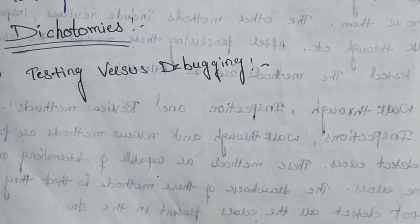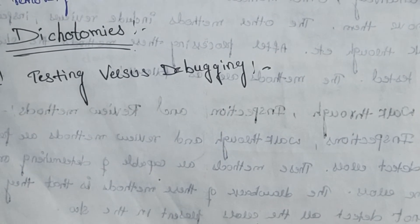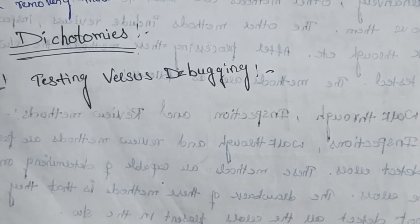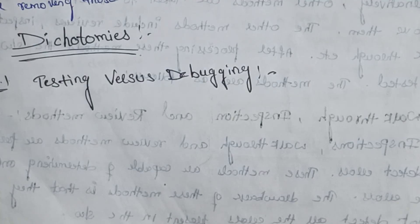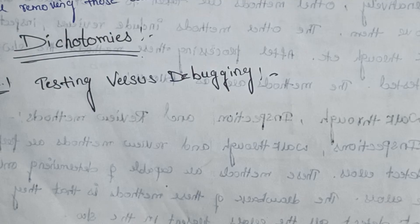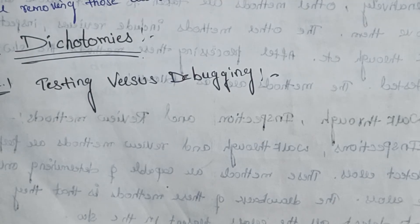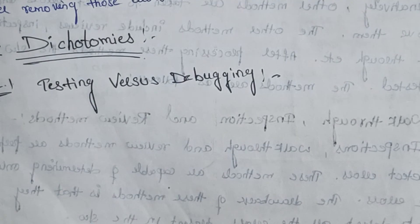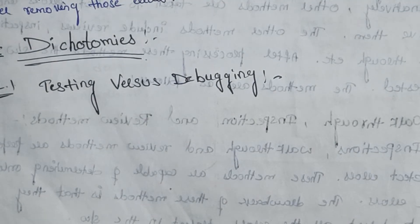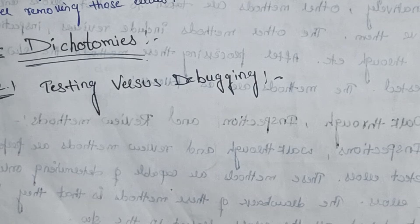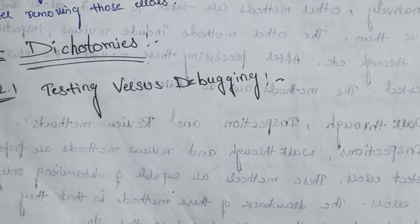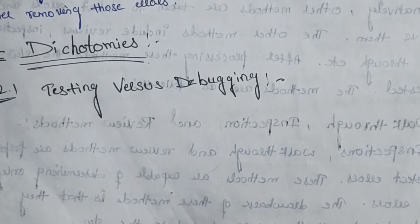Hello friends, welcome to our channel. So this topic is about dichotomies. We already completed previous videos on testing, goals of testing, and phases. So dichotomies means differences - some words look similar but there are main differences between them. Now in dichotomies, first we will do testing vs debugging, and we will write down their differences.